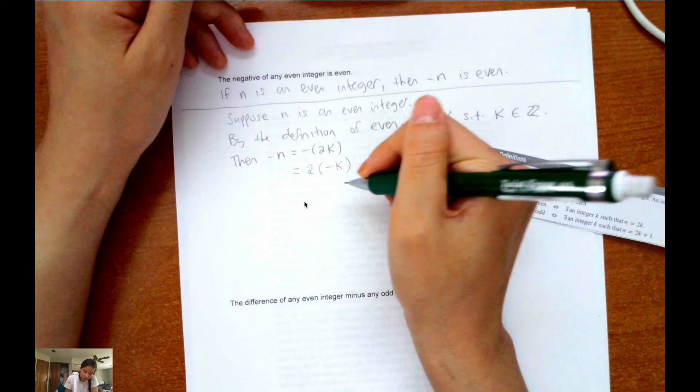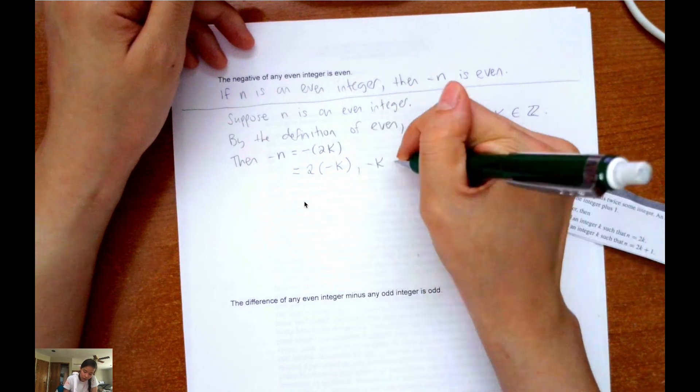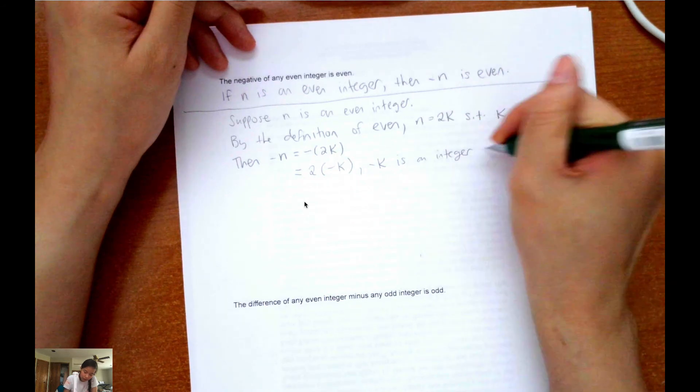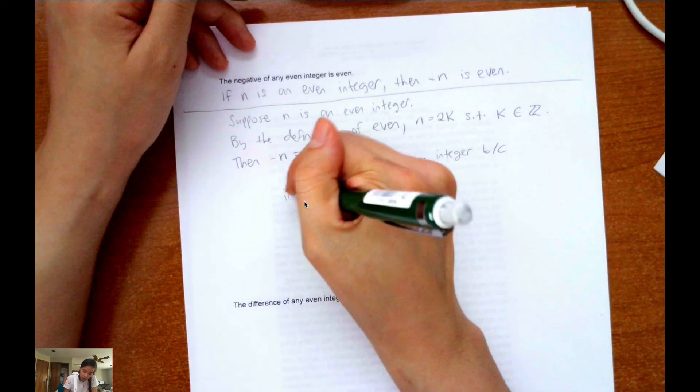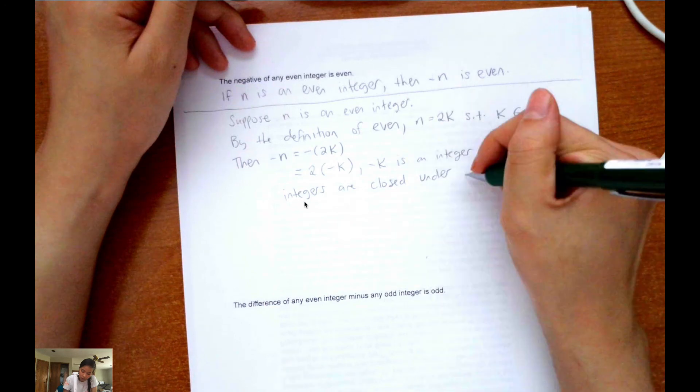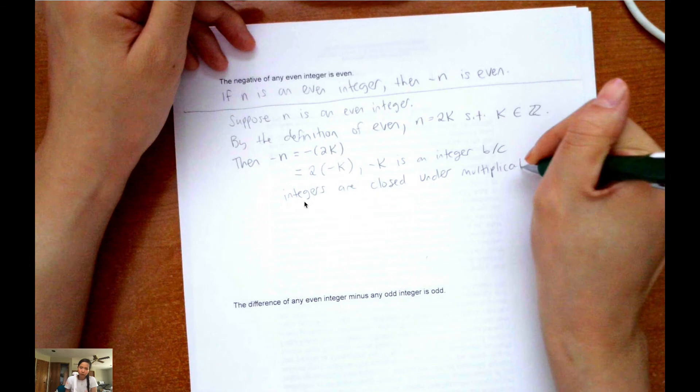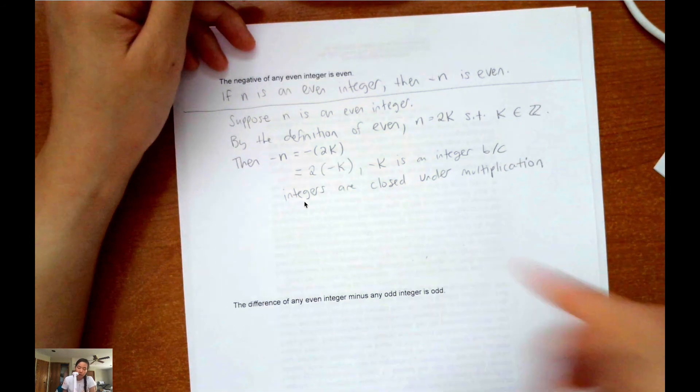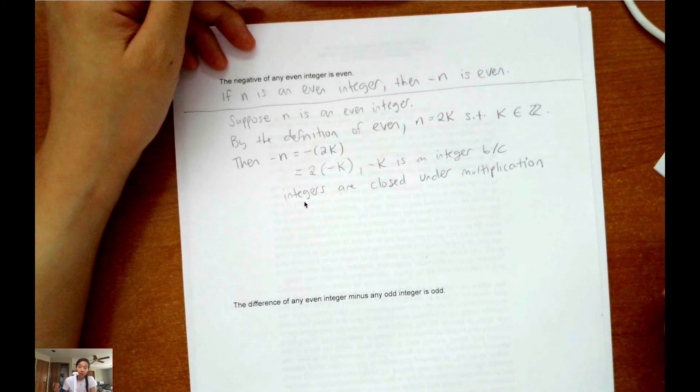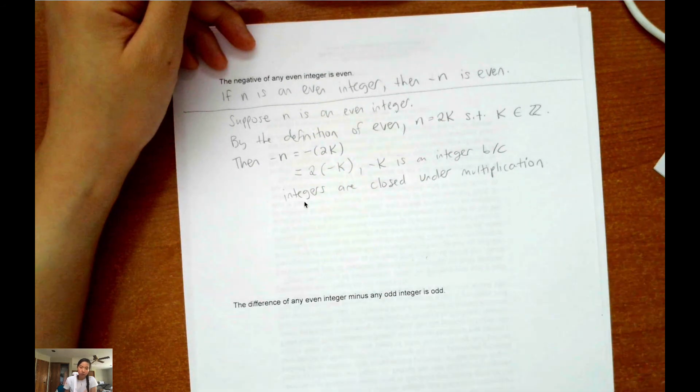And then we could say negative k is an integer because integers are closed under multiplication. So what does that mean? What does closed under multiplication mean? It means if I multiply integers together, that creates integers. If integers are closed under subtraction, then whenever I subtract integers, that creates integers. Keep in mind though,